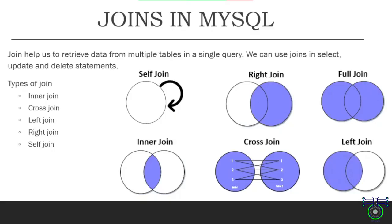In MySQL or any other relational database, we have some joins. Joins help us to retrieve data from multiple tables in a single query. Whenever you write a query, you may need to add some relationship and get results from multiple tables. We can use joins in SELECT, UPDATE, and DELETE statements — these are the three commands where you can put your joins.